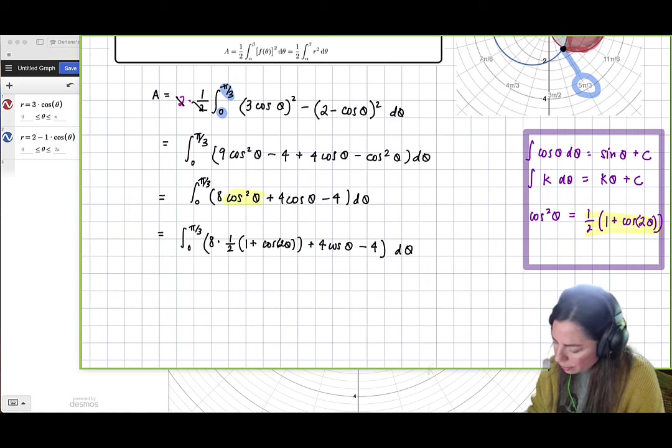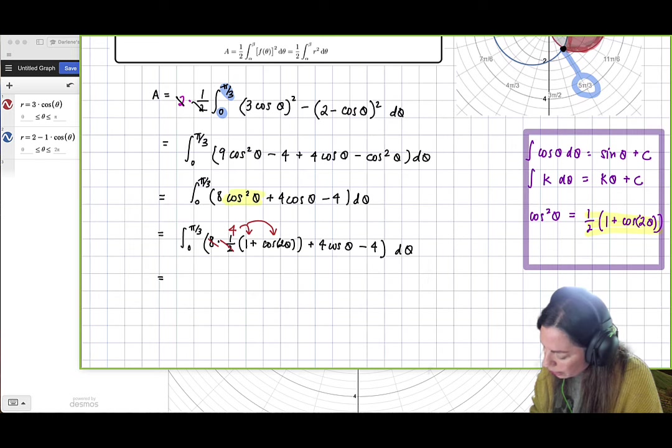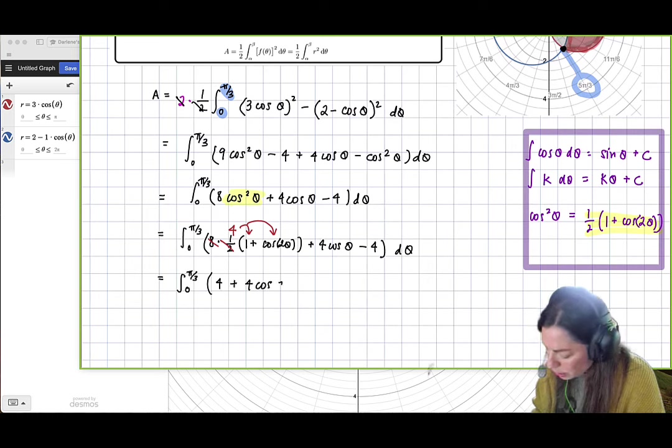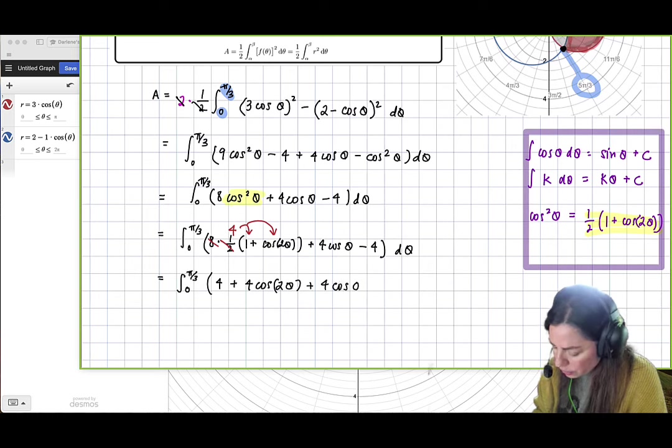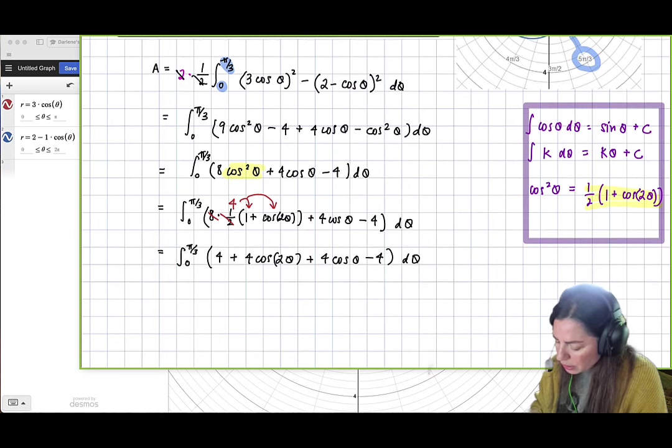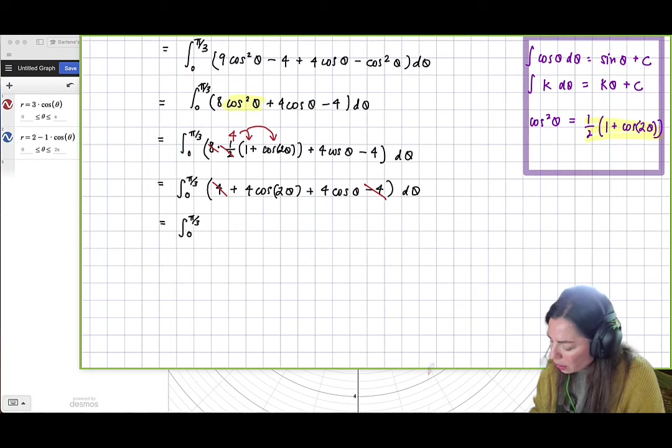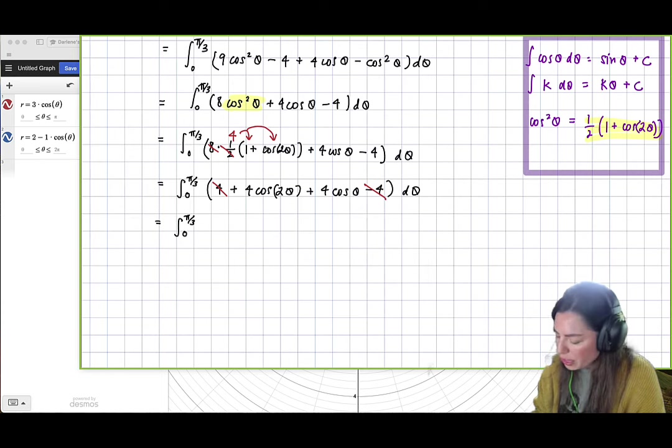All right. And so now we can go ahead and simplify. We see 8 times 1 half is 4. And we'll go ahead and take that 4 and distribute. And so we can go ahead and get now the definite integral from 0 to pi over 3, 4 times 1, 4, plus 4 cosine 2 theta, and then plus 4 cosine theta minus 4 d theta. And what's nice about writing this step out is this part here where 4 minus 4 is 0 and they cancel. So now all we're left with is the area that's equal to definite integral of 0 to pi over 3 of 4 cosine 2 theta plus 4 cosine theta d theta.